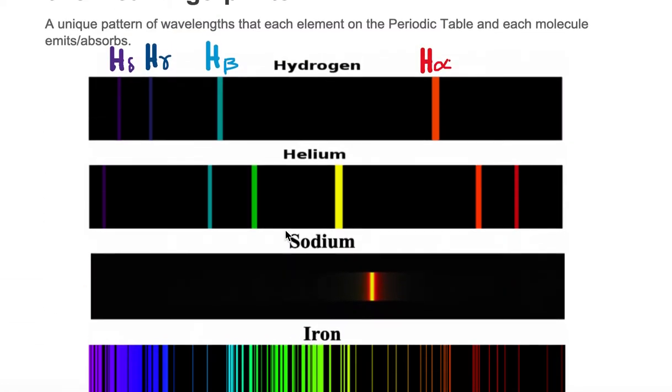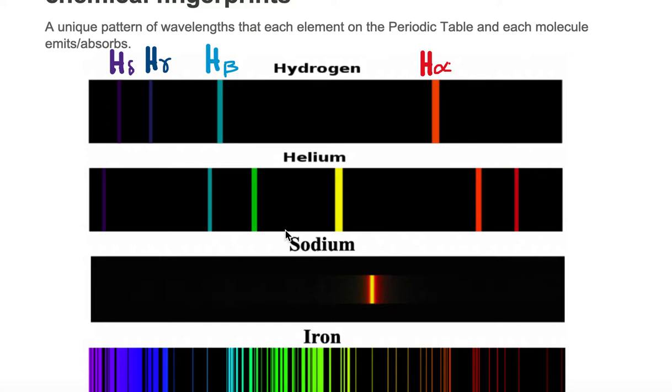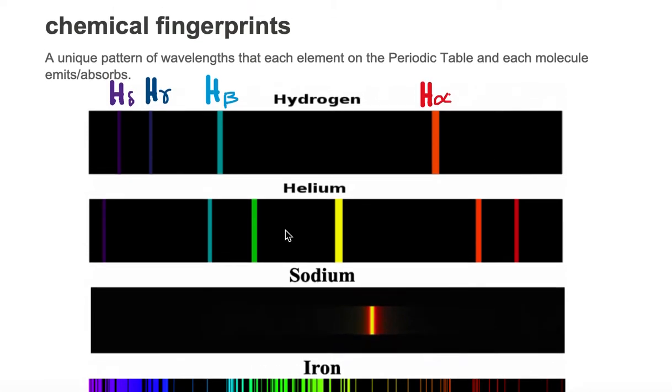So let's take a look at some elements on the periodic table and we're only looking at emission in these chemical fingerprints. Let's look at hydrogen. If you take hydrogen and fill a glass tube with just hydrogen and then you electrify that gas, you will see hydrogen emits four colors if you look through a diffraction grating.